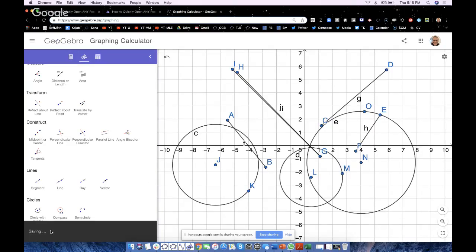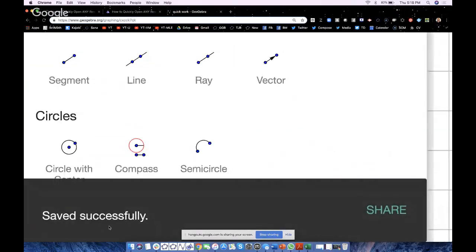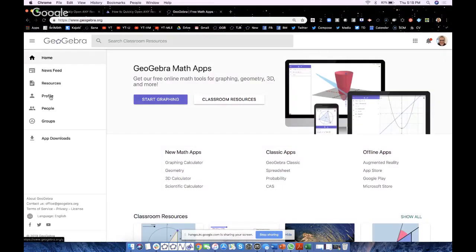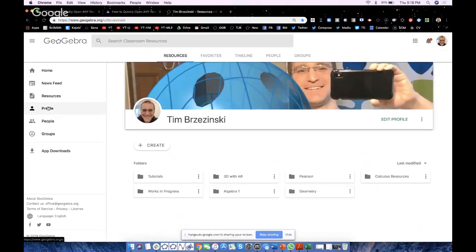So now it says saving down here, lower left corner. Ah, beautiful. Saved successfully. So where the heck does this file go? I can close out of it. It is saved. What you need to do is go back to GeoGebra and go to your profile page right over here. Click on profile.